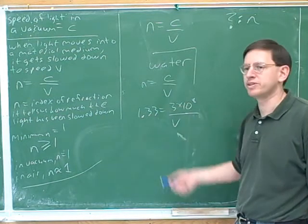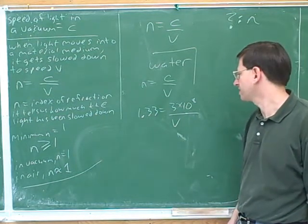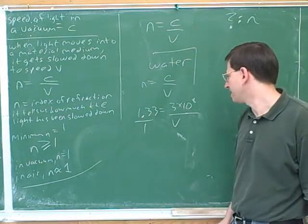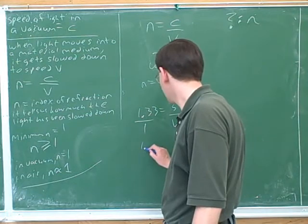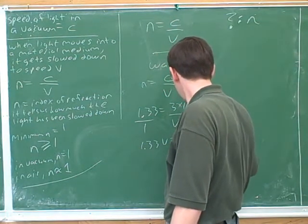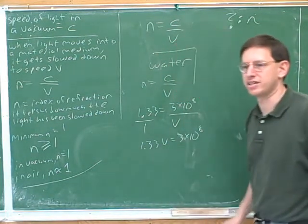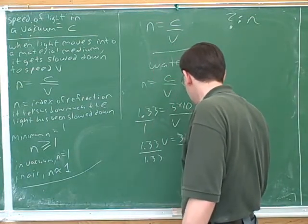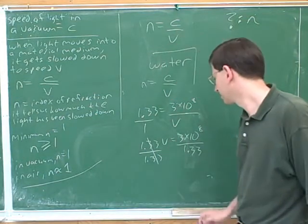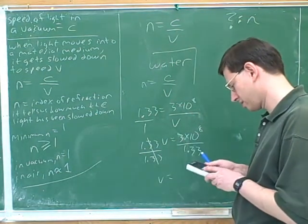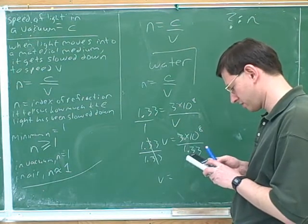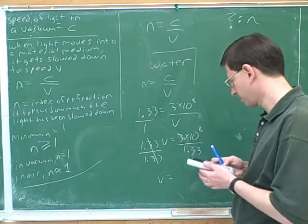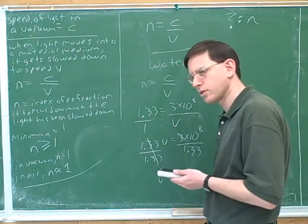Well, there's a couple things we could do. We could cross multiply. Maybe cross multiplying is a good thing to do. We could take the reciprocal of both sides. That's a trick that we've used a lot here. Maybe I'll just cross multiply here, though. So that gives us 1.33V equals 3 times 10 to the eighth. And that tells us that we're dividing into 3 times 10 to the eighth. So it's 3 times 10 to the eighth over 1.33.